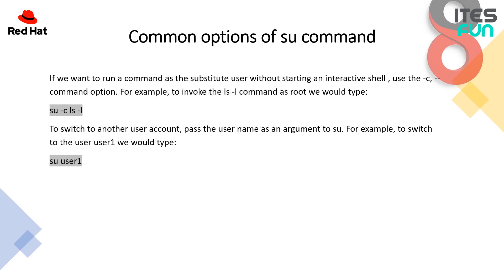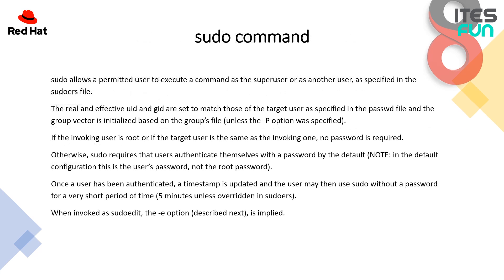If you want to run a command as a substitute user without starting an interactive shell, use the -c option. For example, to invoke the ls -l command as root, you would type: su -c 'ls -l'. To switch to another user account, pass the username as an argument — for example, to switch to user1 you would type: su user1.